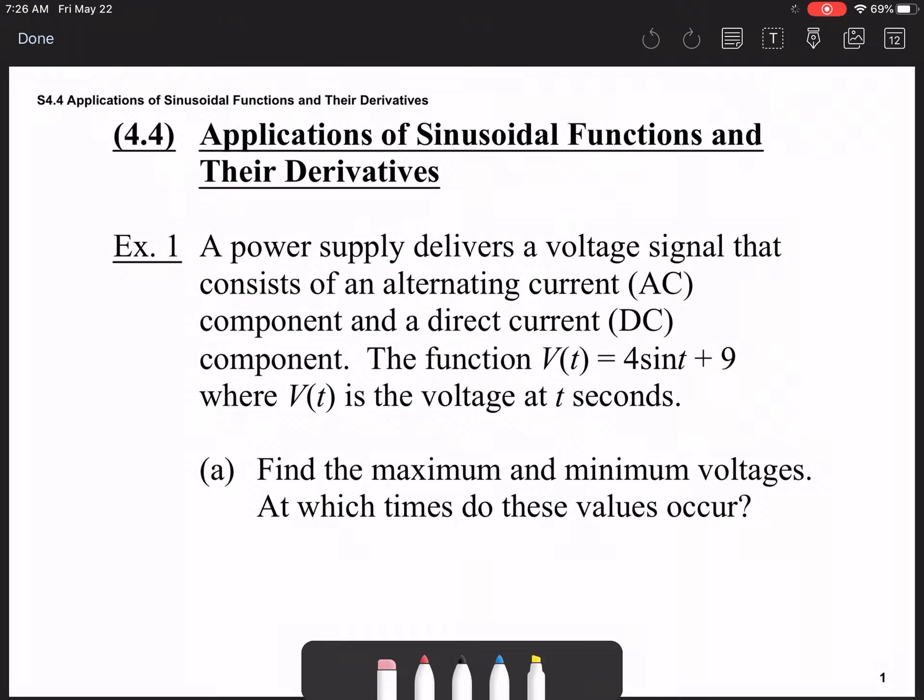Let's first start out with a power supply that delivers a voltage signal that consists of alternating current and direct current, given by this formula: V(t) = 4sin(t) + 9, where V(t) is the voltage at t seconds. We want to find the maximum and minimum voltages and at which times these occur.